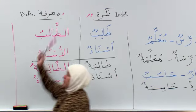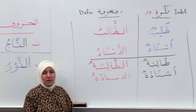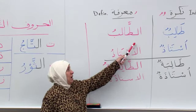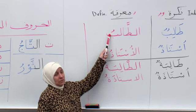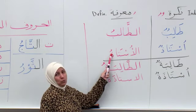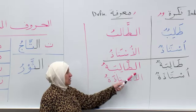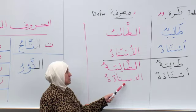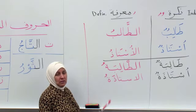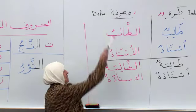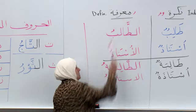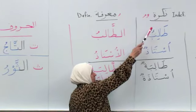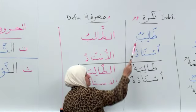Now we move into the definite noun. The first way is to add alif and lam. We say: الطالبُ، الأستاذُ، الطالبةُ، الأستاذةُ. With the معرفة, the definite noun, you hear the O sound. With the نكرة, the indefinite, you hear 'on'.